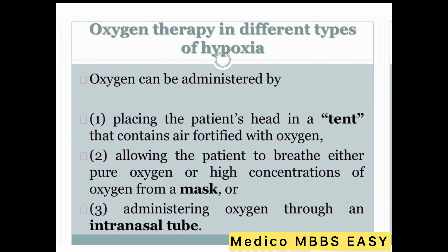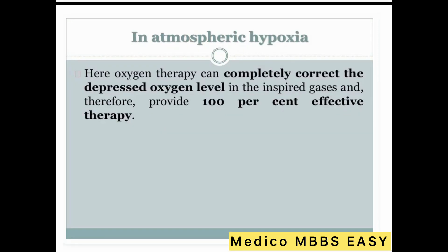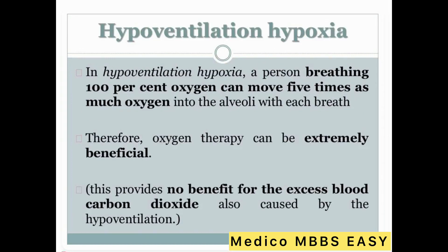In atmospheric hypoxia, oxygen therapy can completely correct the depressed oxygen level in the inspired gases and therefore provide 100% effective therapy. In hypoventilation hypoxia, a person breathing 100% oxygen can move five times as much oxygen into the alveoli with each breath, so oxygen therapy can be extremely beneficial. However, it provides no benefit for the excess blood carbon dioxide also caused by hypoventilation.